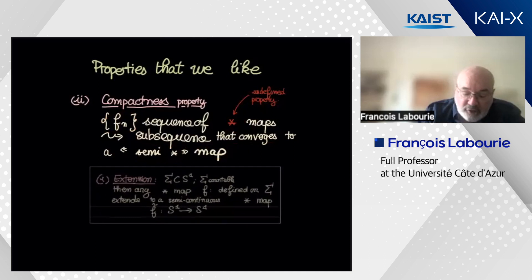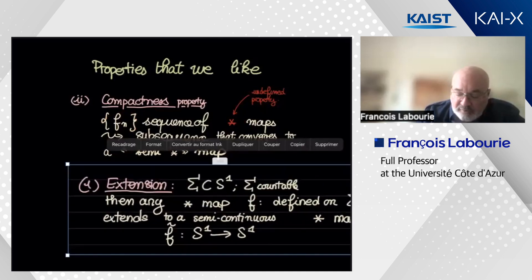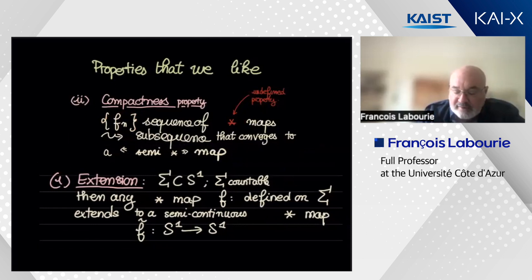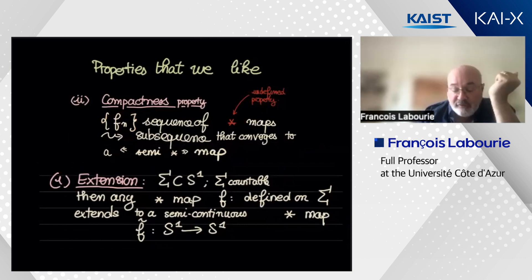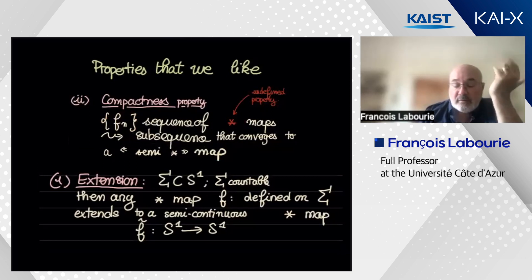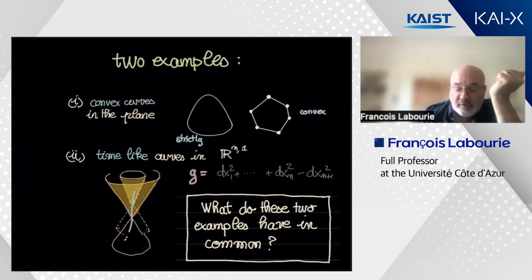The second property is an extension property. If you have a countable set sigma in S^1 and a map defined on this countable subset which is convex, then you can extend it to a map from S^1 to S^1 which may not be continuous but is semi-continuous in some way. For convex curves, if you have a convex set of ordered points, you can extend that to a whole continuous curve.